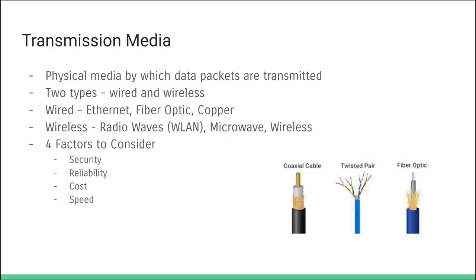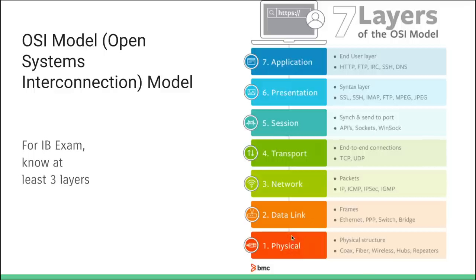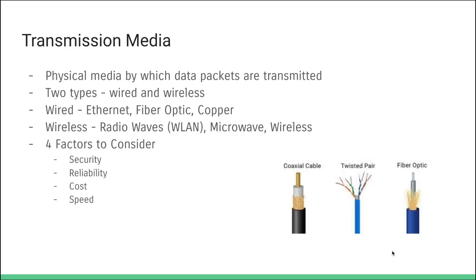The next topic is transmission media — physically what transmits our data packets, which corresponds to that physical layer. This includes wireless, Ethernet, and fiber optic. There are broadly two types of transmission media: wired and wireless.